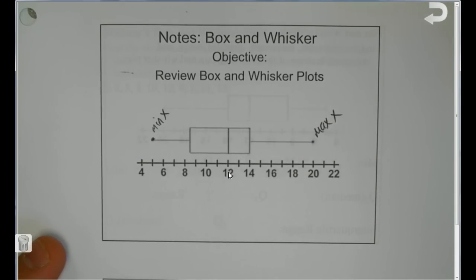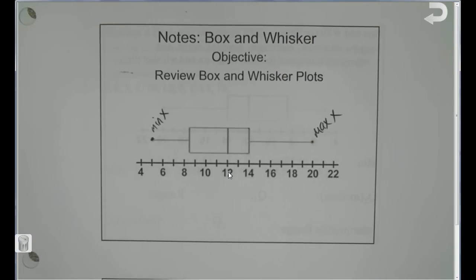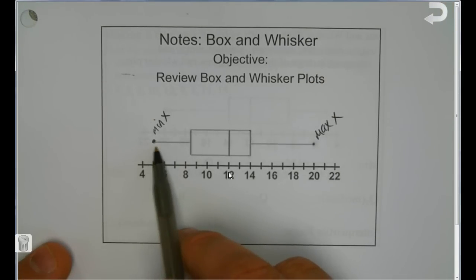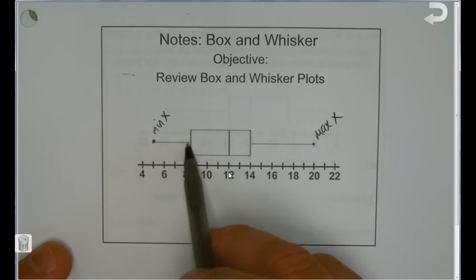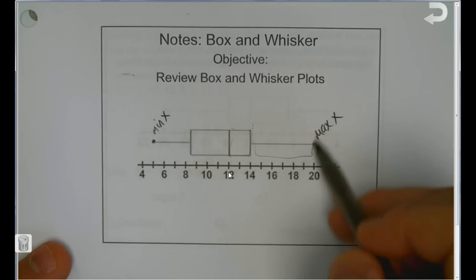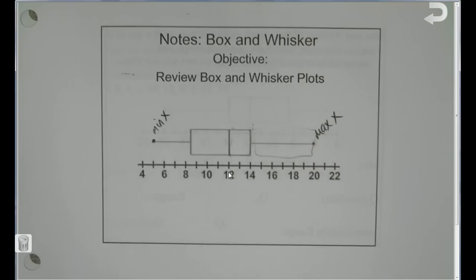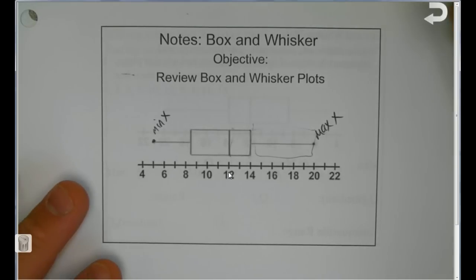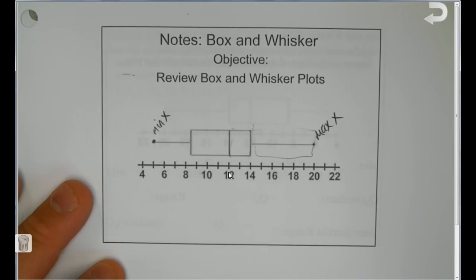We use those to calculate range, which is what we've been talking about with the other stats topics. What a box and whisker plot does is break a set of data into 25% chunks. This section is 25% of the data, this one is 25%, this is 25%, and this is 25% — so it breaks all our data into four chunks so we can talk about and compare the data.